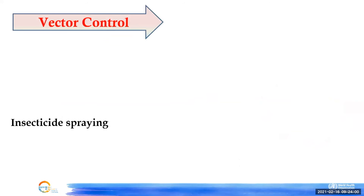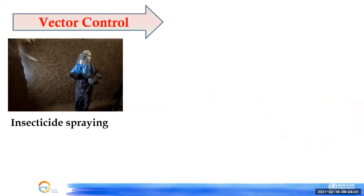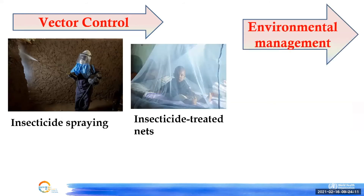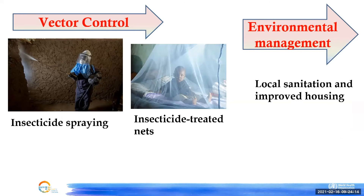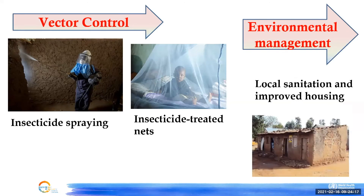Vector control — which will be covered in a dedicated session — includes insecticide spraying and insecticide treatment. Environmental management is also important because most sandfly breeding places are around housing. These types of houses facilitate sandfly breeding, so environmental improvements are a key control measure.